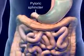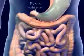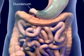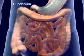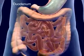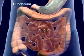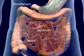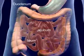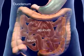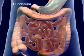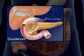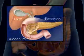Chyme exits through the pyloric sphincter into the duodenum of the small intestine. The major portion of absorption and digestion occurs in the small intestine. The mucosa secrete enzymes that supplement the digestive enzymes of the pancreas and liver.